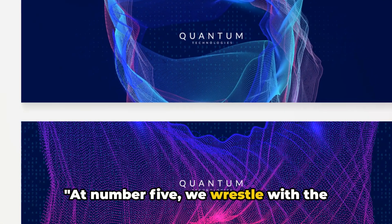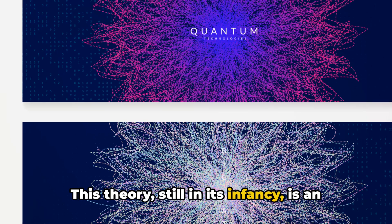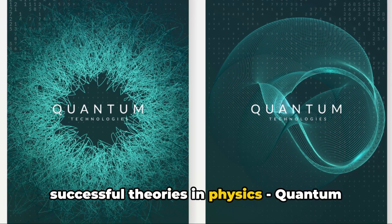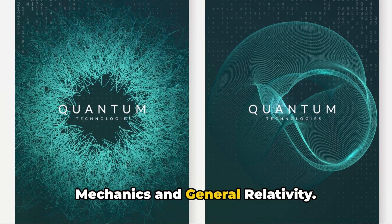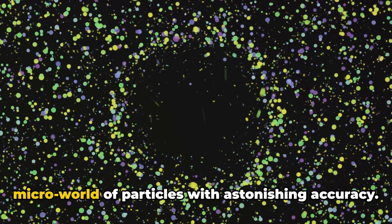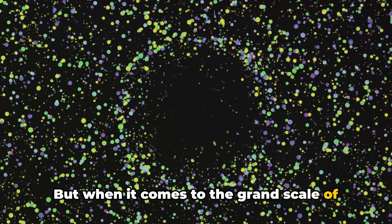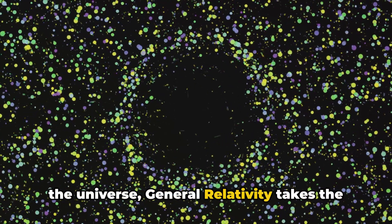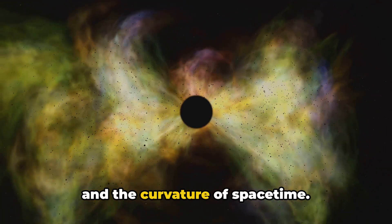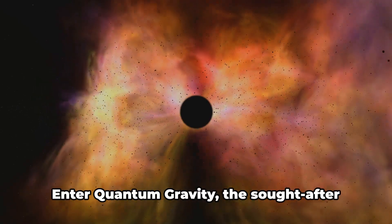At number five, we wrestle with the elusive quantum gravity. This theory, still in its infancy, is an ongoing quest to harmonise two of the most successful theories in physics, quantum mechanics and general relativity. You see, quantum mechanics explains the micro-world of particles with astonishing accuracy. But when it comes to the grand scale of the universe, general relativity takes the helm, explaining the workings of gravity and the curvature of space-time. The problem, these two theories as they stand are incompatible.